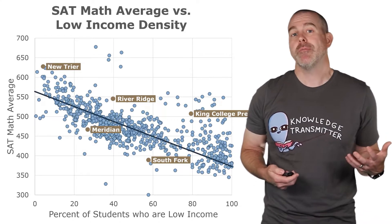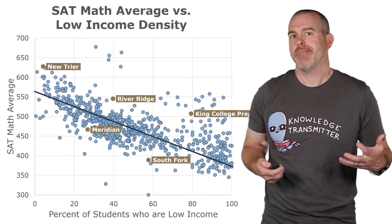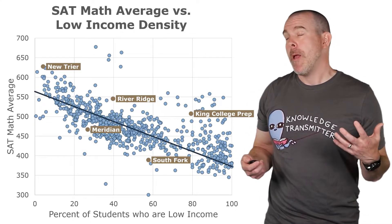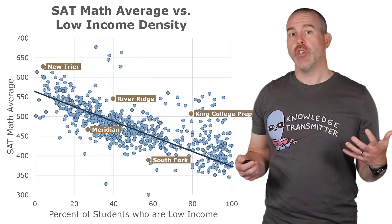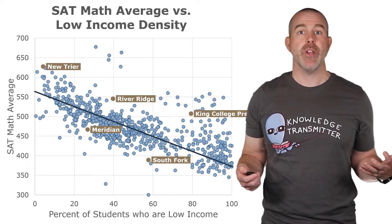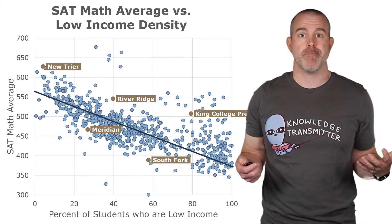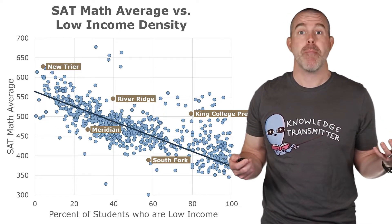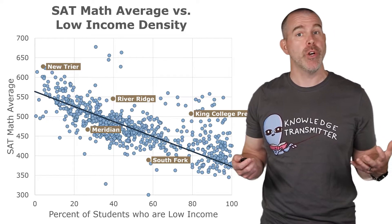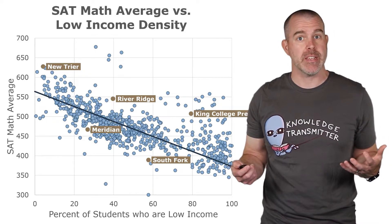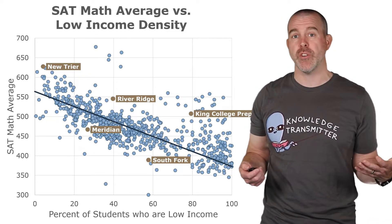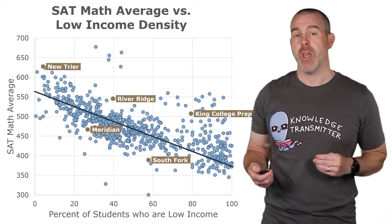Suppose we draw a line — it looks like a reasonable enough line. The question, though, is how do we know if this is the best line? Maybe there's a better line. How do we gauge how good a fit it is, and how can we find the equation for that line?